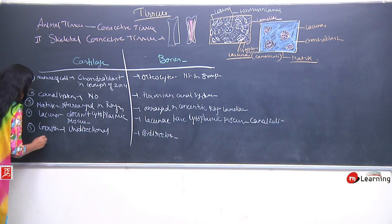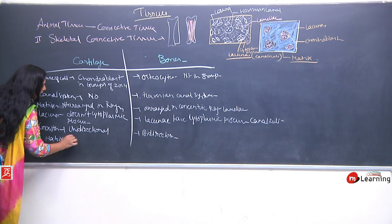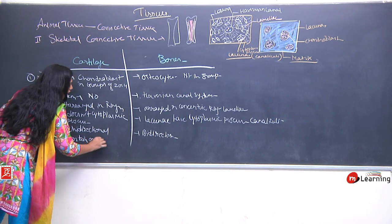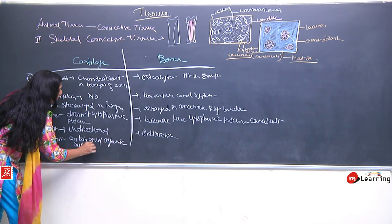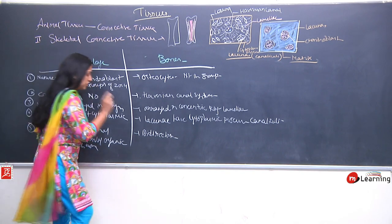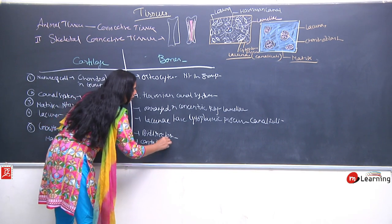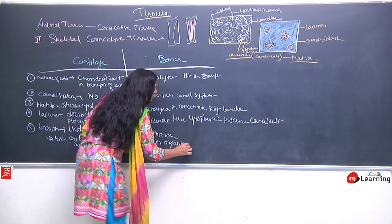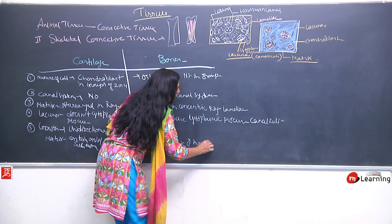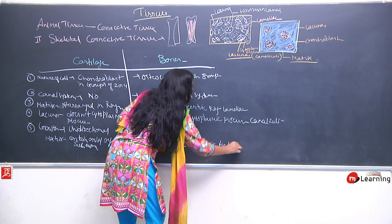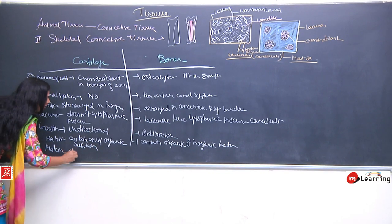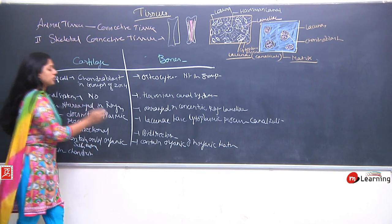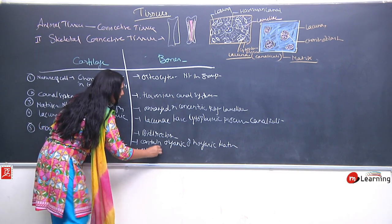Cartilage contains only organic matrix — organic substances like glycoproteins — whereas bones contain both organic and inorganic matter. The inorganic matter includes calcium phosphate. The protein in cartilage is chondrin protein, while in bones it is ossein protein.